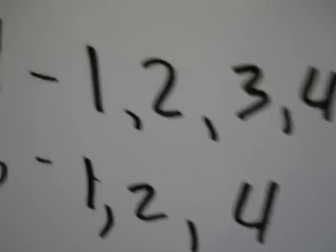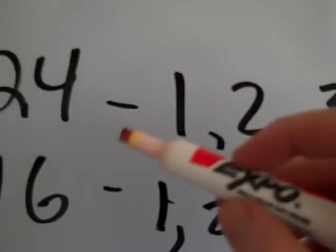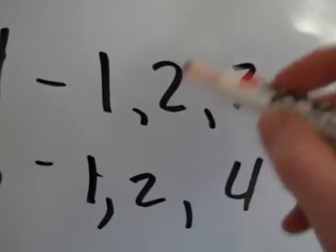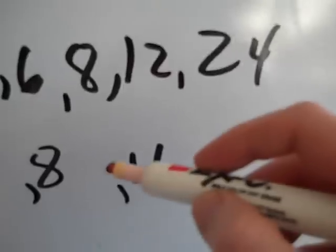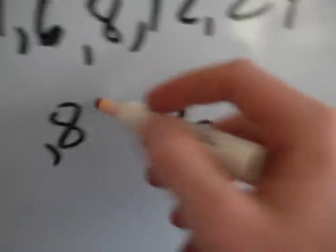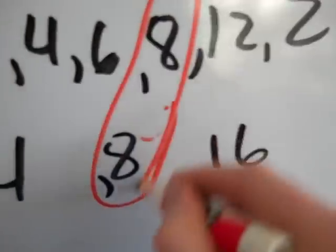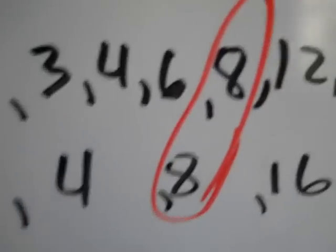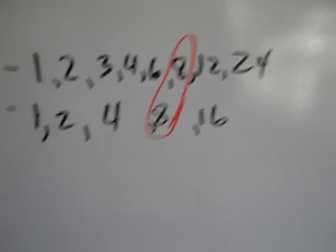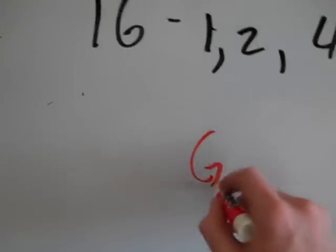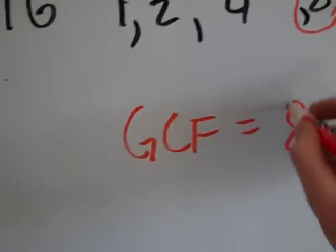So then after you have the factors listed for both numbers, what you would do is you would look for common factors. So they both have 1 as a common factor. They both have 2 as a common factor. They both have 4 as a common factor. They both have 8 as a common factor. And then that's it. The greatest of the common factors is 8. It's the largest of the common factors that 24 and 16 have. So the GCF equals 8.